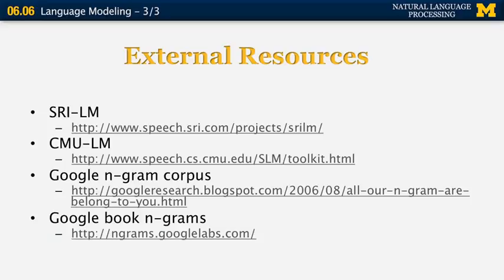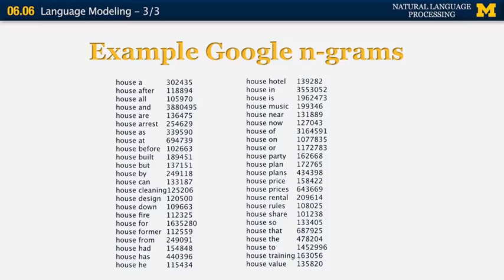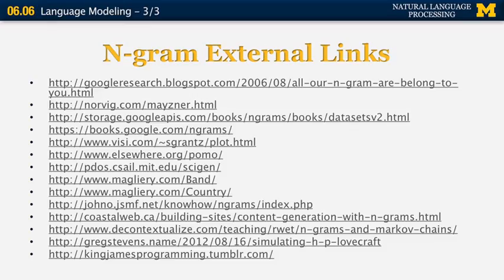There is also the Google n-grams viewer, which allows you to track the presence of n-grams historically over hundreds of years. Here are some example Google n-grams: all bigrams are conditioned on the word 'house.' For example, the word 'a' appearing after 'house' has a frequency of 302,435; 'after' appears after 'house' 118,000 times, and so on. These very large counts can provide very reasonable bigram probability estimates for use in your systems. Some websites also use n-grams to randomly generate text, such as scientific papers, poems, and country band names.